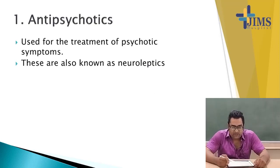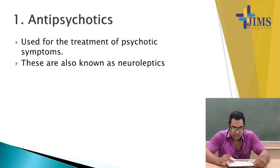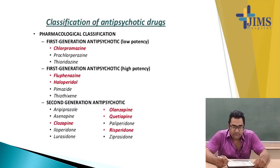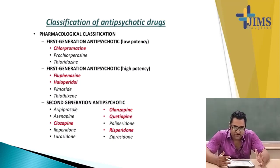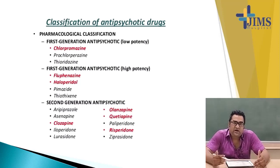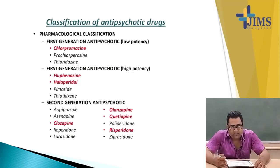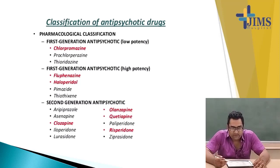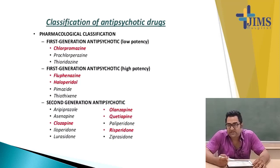Antipsychotics are used for the treatment of psychotic symptoms. These are also known as neuroleptics. They are classified into first generation antipsychotics and second generation antipsychotics, and recently there is another group known as third generation or novel antipsychotics. The first antipsychotic discovered was chlorpromazine in the year 1952, and the second was clozapine, which is a second generation antipsychotic.